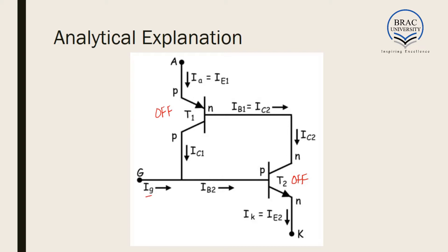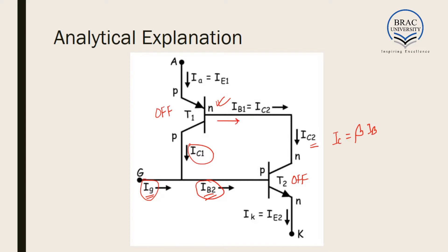Now, what happens if we increase IG — if we increase the gate current — is that the base current of this BJT is the summation of the collector current of the PNP BJT and the gate current. So when we increase the gate current, we find a base current for this NPN BJT. Since this NPN BJT now has a base current, it turns on. Since this BJT turns on, the base current generates a collector current. We know IC = β·IB, so since we have a base current, we will have a collector current. This collector current is actually the base current of the PNP transistor, which causes a base current to flow through it, turning it on.